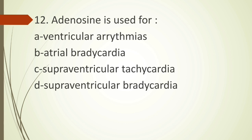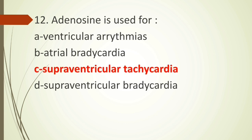Twelfth question: adenosine is used for — option A ventricular arrhythmia, option B atrial bradycardia, option C supraventricular tachycardia, option D supraventricular bradycardia. Adenosine is the drug of choice for supraventricular tachycardia. I have posted a video on drug of choices in pharmacology — please go through it as it's very important for DHA and similar exams. The correct answer is option C, supraventricular tachycardia.